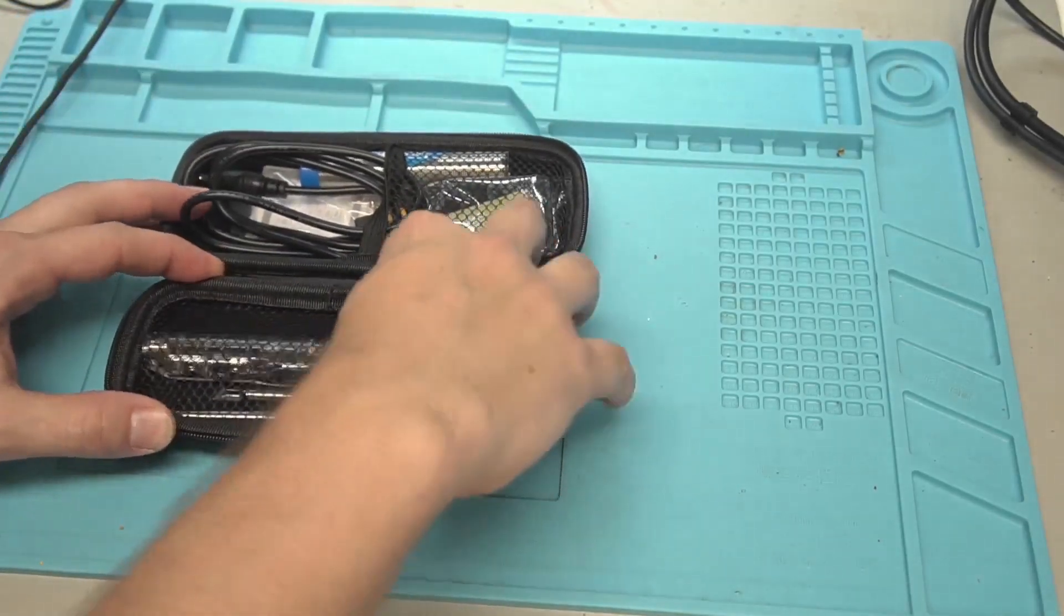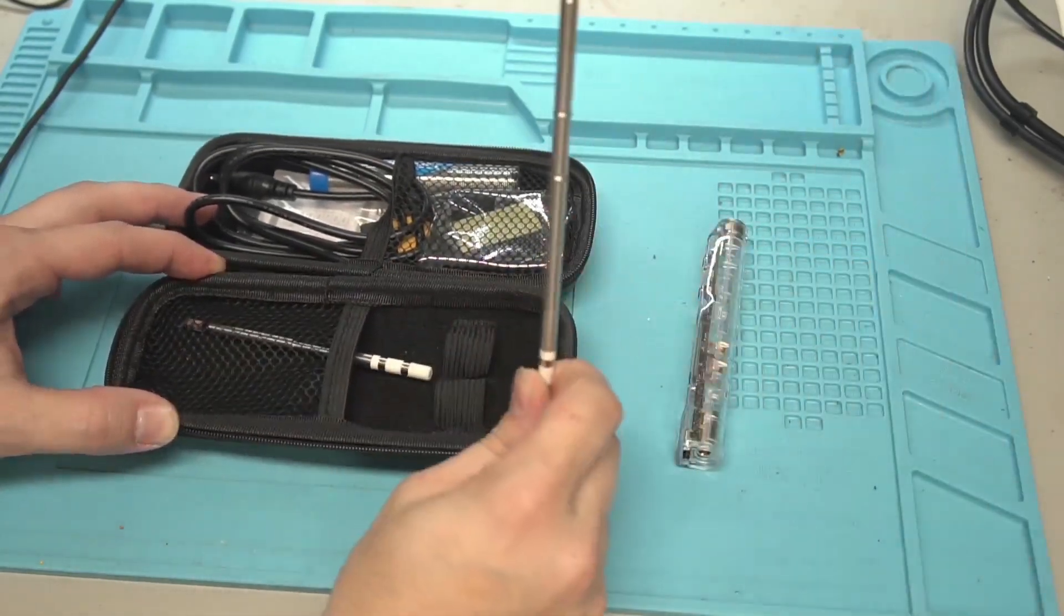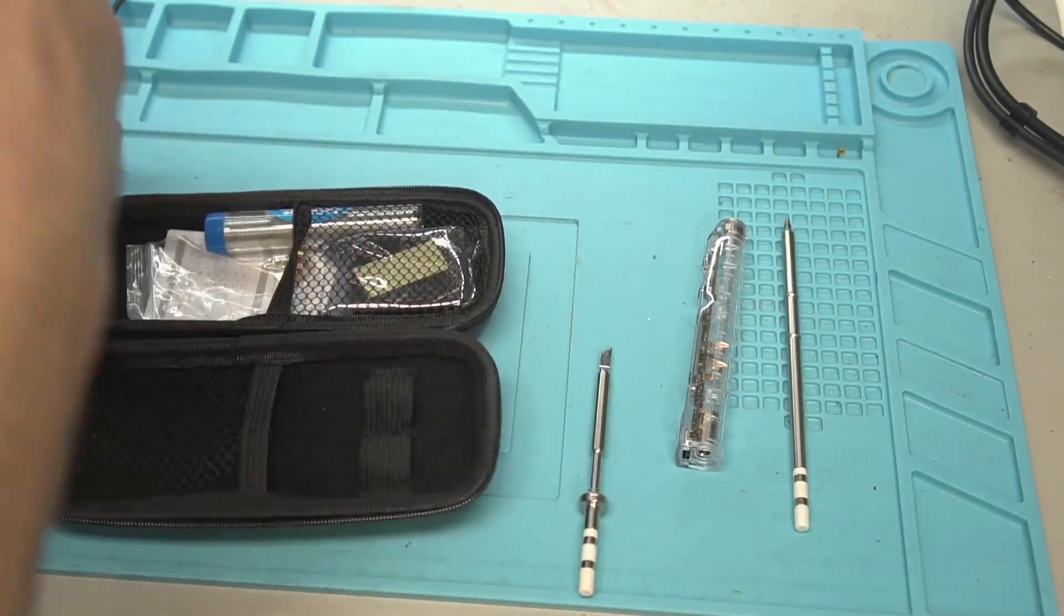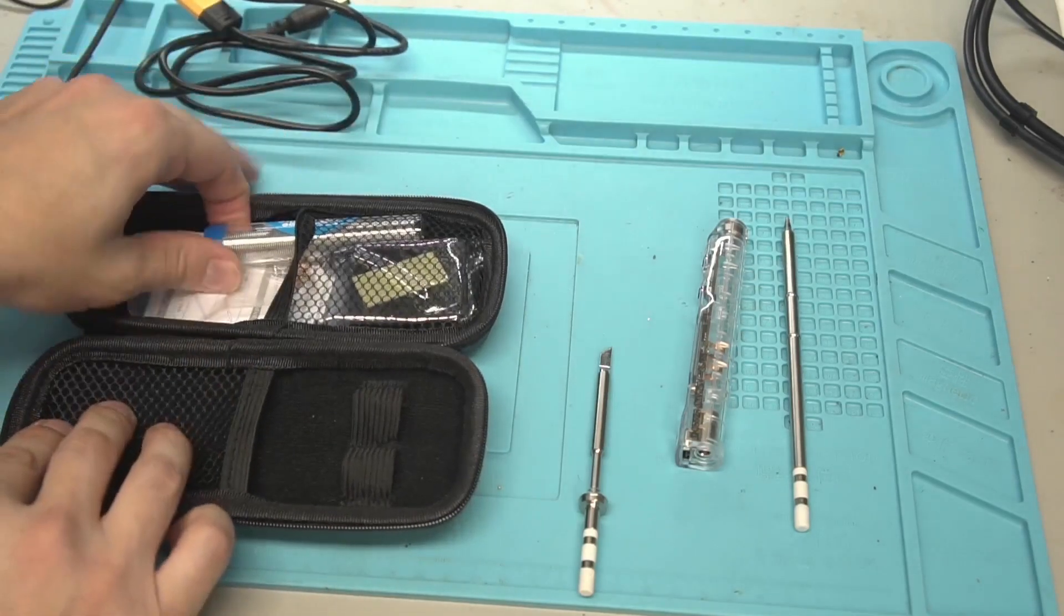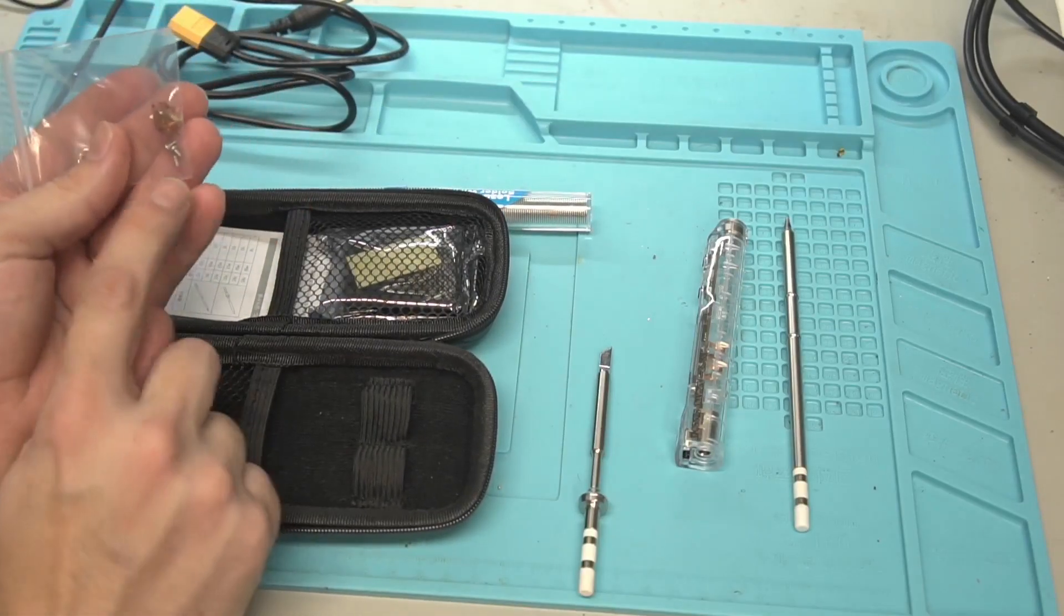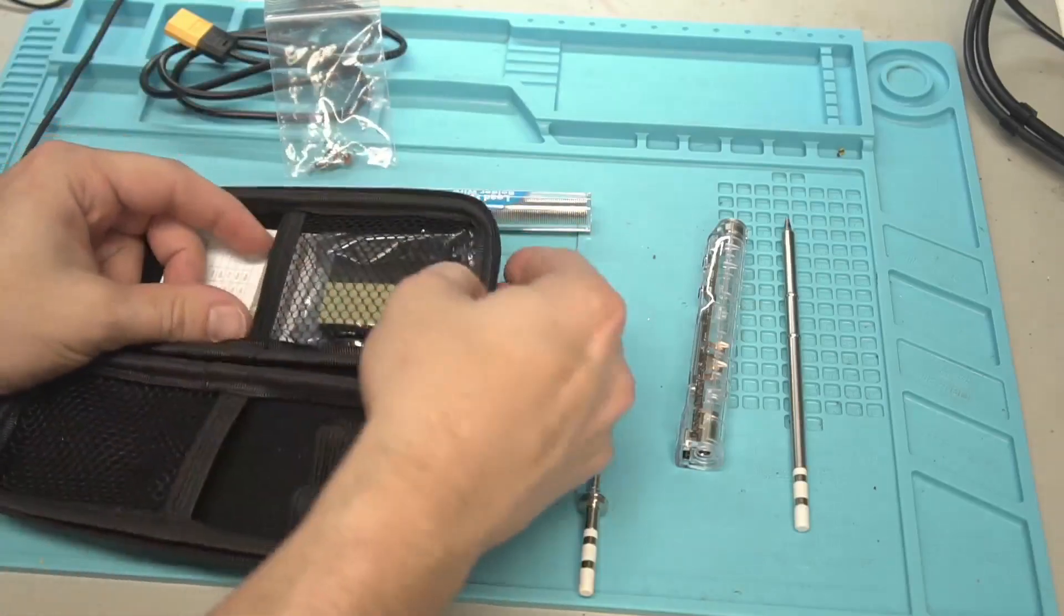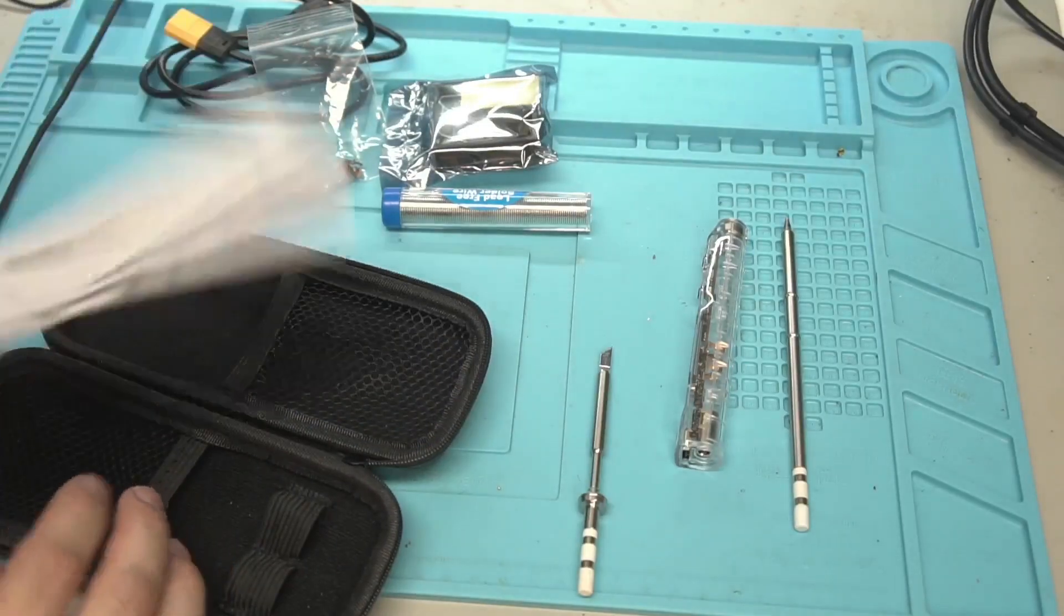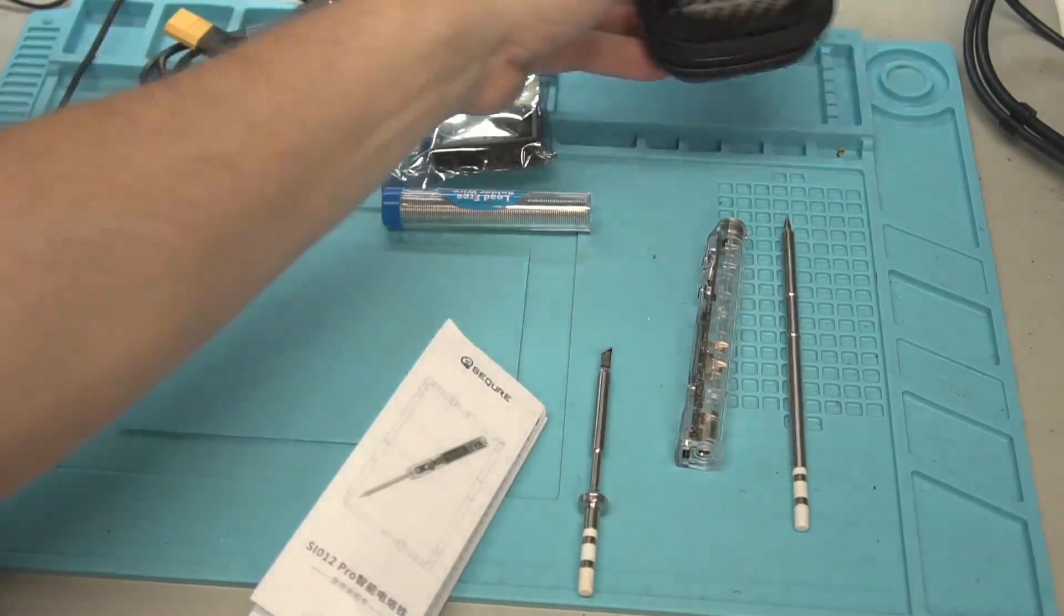Let's take a look at this Sequre soldering iron. We have the soldering iron itself, two different tips because this one can use either your Hakko T12, which is what I prefer, or your TS-100 if you're already in that camp. Then you have a cable so you can use a lithium iron battery pack. This comes with some lead-free solder. Then you have these two extra screws. And then you have a little stand for it, the manual, and this semi-rigid glasses style case to hold it in.